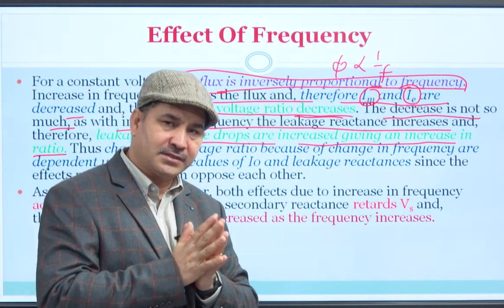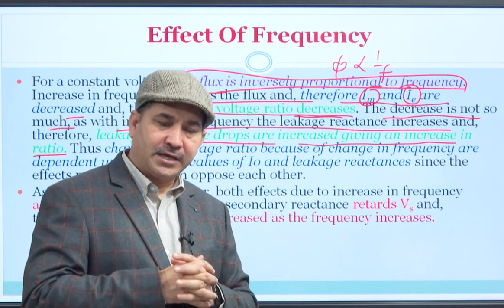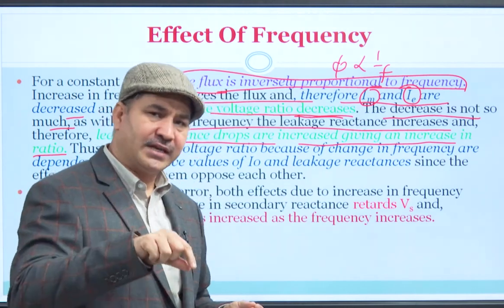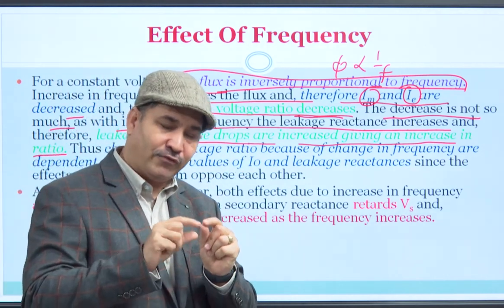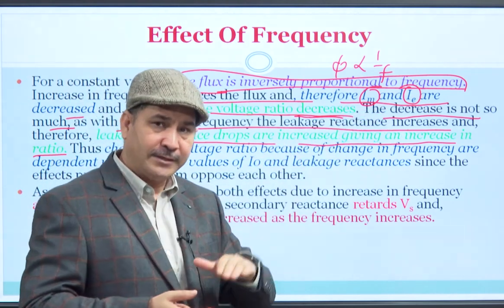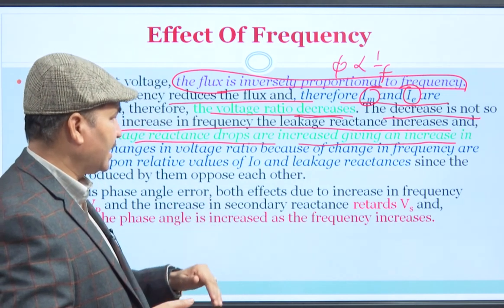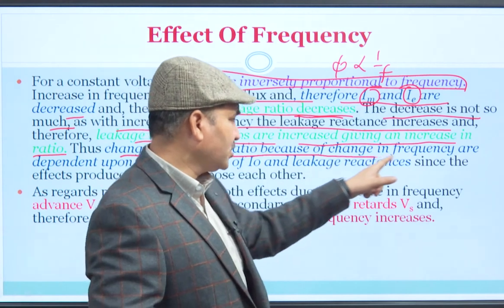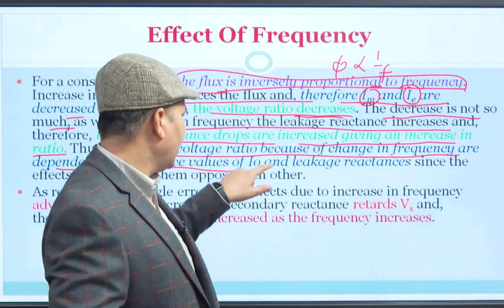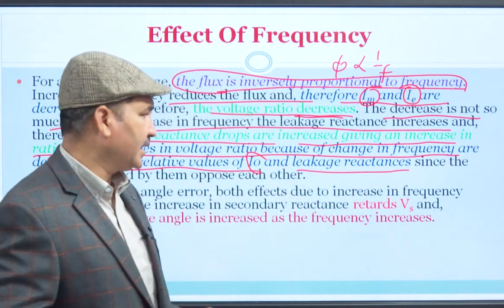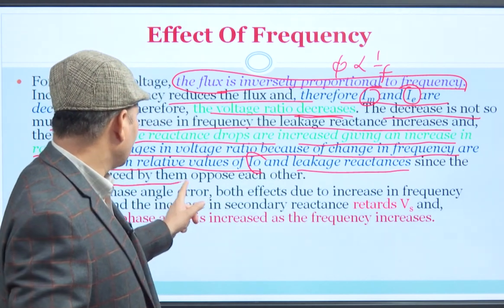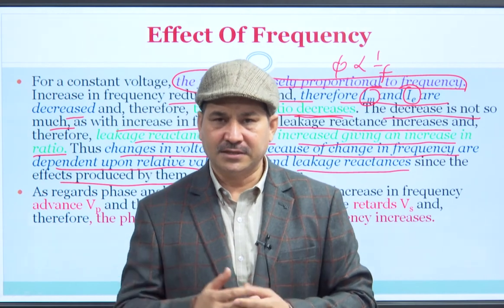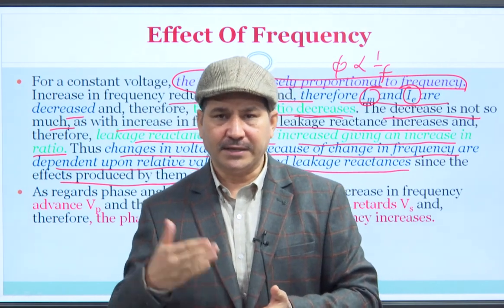This is an important point to remember: in the case of instrument transformers, it is desired that you operate them at rated frequency so that frequency variation is not much. The change in voltage ratio due to change in frequency is dependent upon the relative values of I₀ and leakage reactance. Since these effects oppose each other, they nullify the effect of frequency. Nonetheless, it is recommended to operate them at rated frequency, as the frequency does not have a major effect.